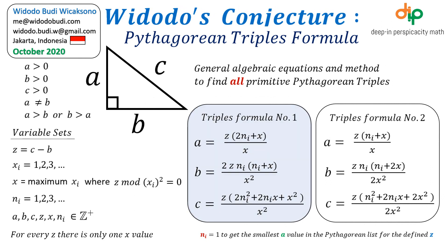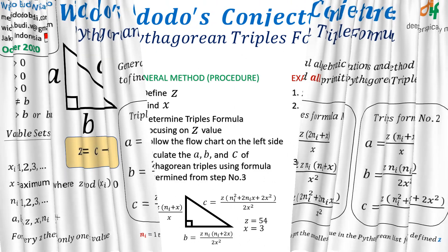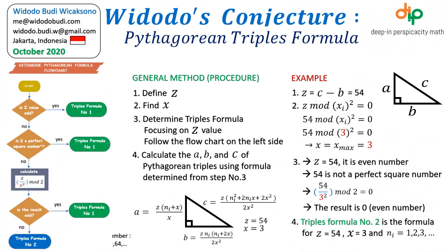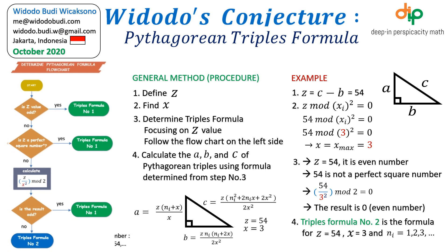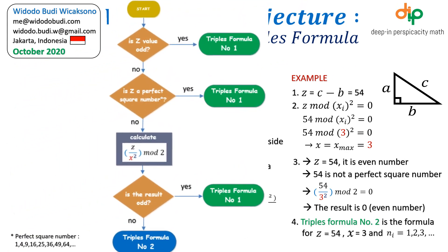There are two sets of algebraic equations, but only one that can be applied to a defined Z value. Z is the difference length between C and B. There is a procedure to select which algebraic equation to be used after defining Z value. As can be seen in the flowchart, the formula selection depends on Z number.